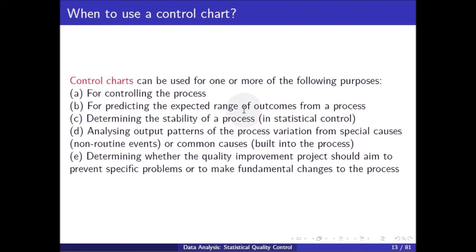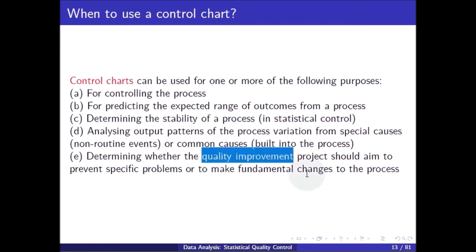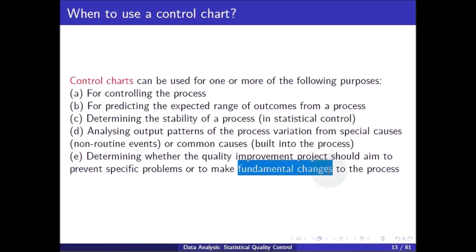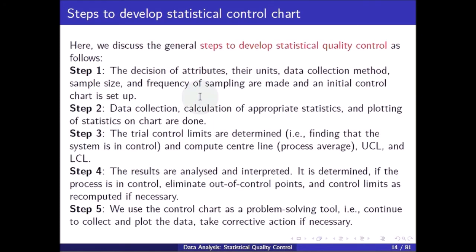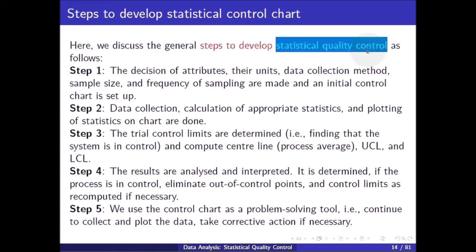Control charts can be used for one or more of the following purposes: controlling the process, predicting the expected range of outcomes from a process, determining the stability of a process, analyzing output patterns of variation from special or common causes, and determining whether a quality improvement project should aim to prevent specific problems or to make fundamental changes to the process.